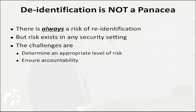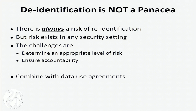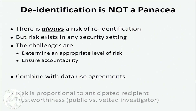That said, de-identification is not a panacea. There is always a risk of re-identification no matter how you define it. But risk exists in any security setting — just ask Edward Snowden. You need to determine what an appropriate level of risk is; there are principles for this in information security. You also need to ensure accountability: I strongly believe data use agreements are important even for de-identified data, so that if somebody does something problematic, you can hold them accountable. HIPAA does not currently let you do that. Risk should be proportional to the anticipated recipient — sharing data publicly versus giving it to a vetted investigator are two completely different settings.